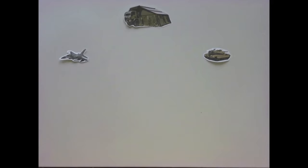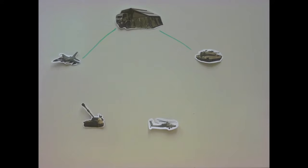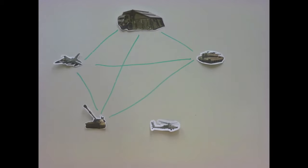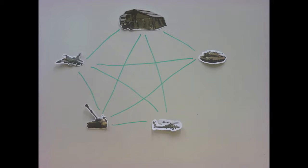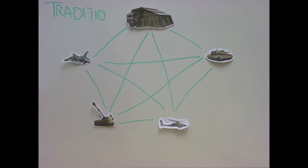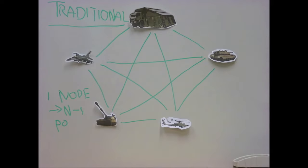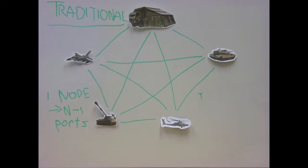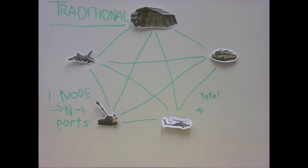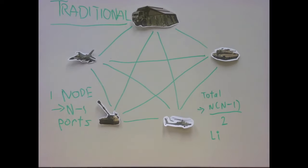Traditionally, within a fighting unit, communication must be provided among a number of stations or fighting platforms, each of which requires a communication path to many other stations at various times. Using a fully connected or mesh topology for analysis, it is evident that full duplex operations require n-1 input-output ports and a total of n times (n-1) divided by two full duplex links if there are n number of stations.